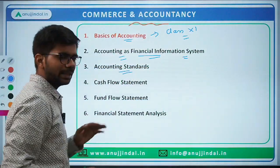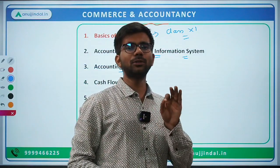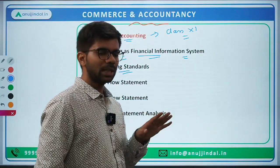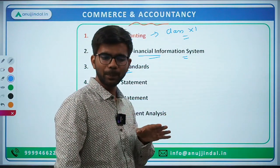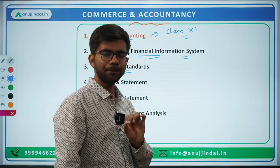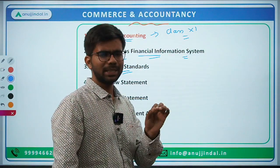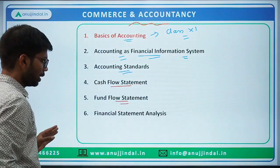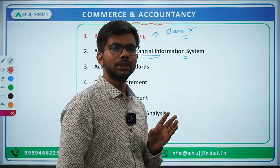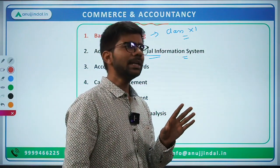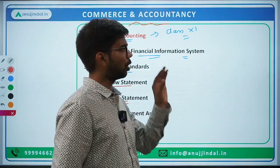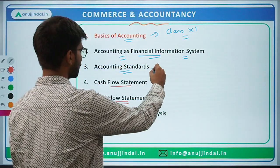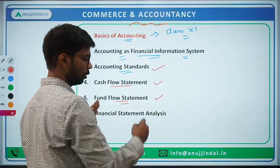Then there are accounting standards and Indian accounting standards. You have to read only a limited set of accounting standards — those related to revenue recognition, PPE (property, plant and equipment), one standard on investment property, one on inventories, and one on foreign exchange transactions. Then next is cash flow statement and fund flow statement. You should be aware of the basic format of these, and small numerical questions could also be asked. Numerical questions can be asked from accounting standards, cash flow, fund flow, and other topics.